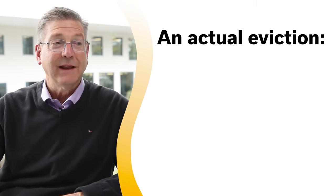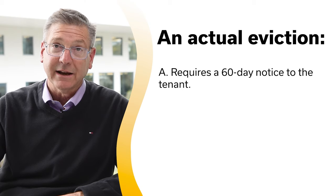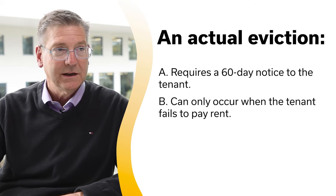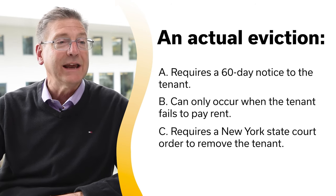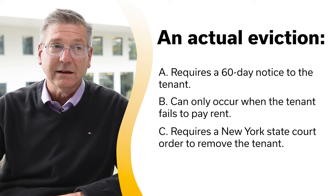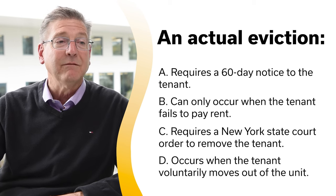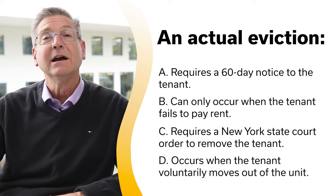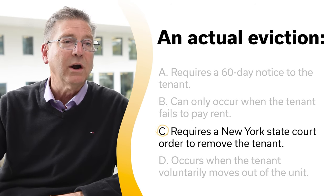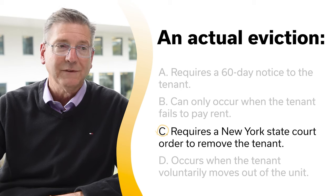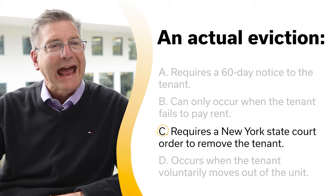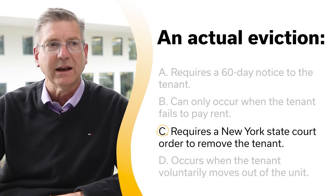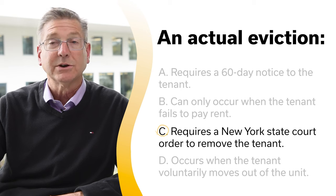An actual eviction: A, requires a 16-day notice to the tenant; B, can only occur when the tenant fails to pay rent; C, requires a New York state court order to remove the tenant; or D, occurs when the tenant voluntarily moves out of the unit. The correct answer is C, requires a New York state court order to remove the tenant. An actual eviction occurs only when the landlord obtains a New York state court order to remove the tenant for failure to comply with the terms of the lease.